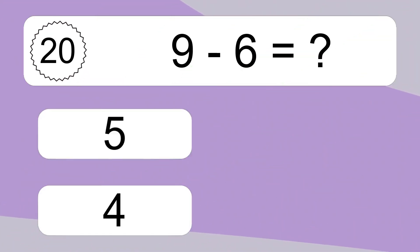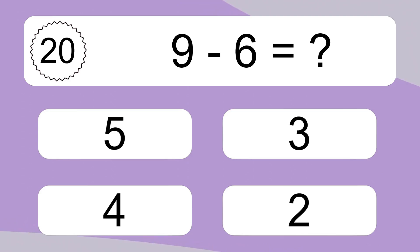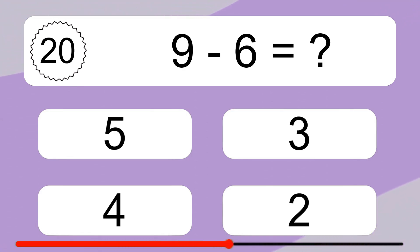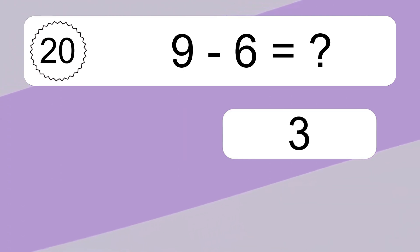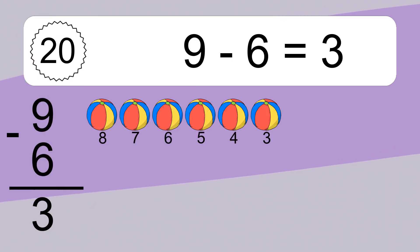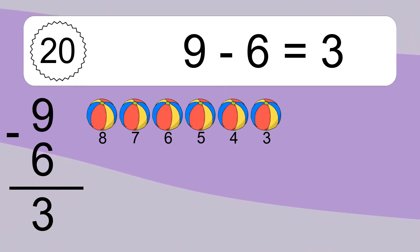9 minus 6 equals what? 9 minus 6 equals 3. Let's count it. 8, 7, 6, 5, 4, 3.